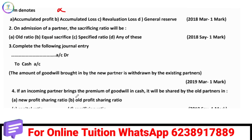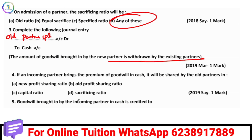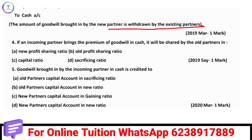In the admission of a new partner, there is a sacrificing ratio. If old partners sacrifice equally, you will have an equal sacrifice. If a specified ratio is given, that will be your answer. When goodwill is completed, you withdraw it from the existing partners. You debit the old partners' Capital Account and credit it in the sacrificing ratio.